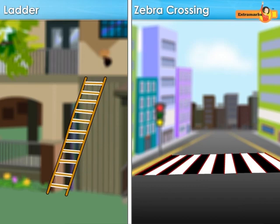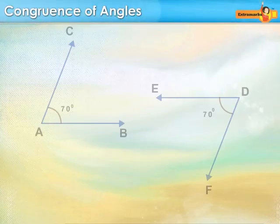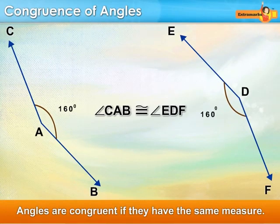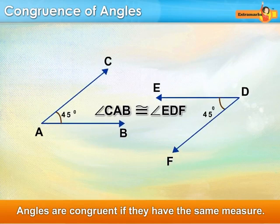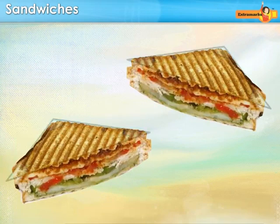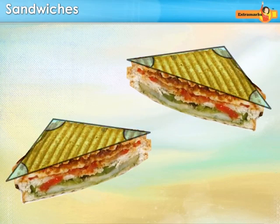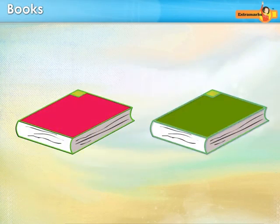Like congruence among line segments, we also have congruence of angles. Here, these angles are congruent as they are of equal measurement. Angle formed in pair of sandwiches, pair of books represents the congruence of angles.